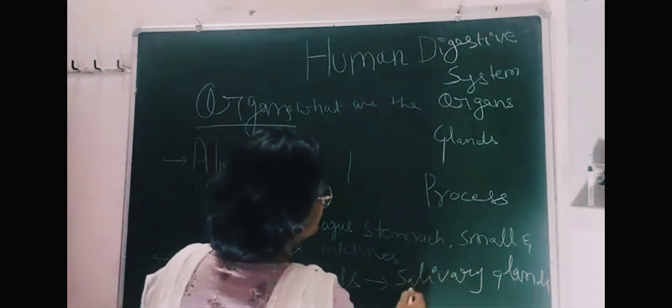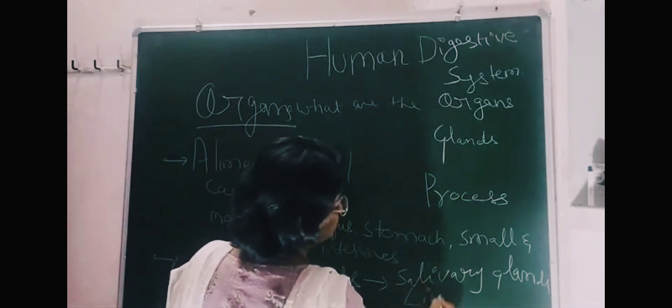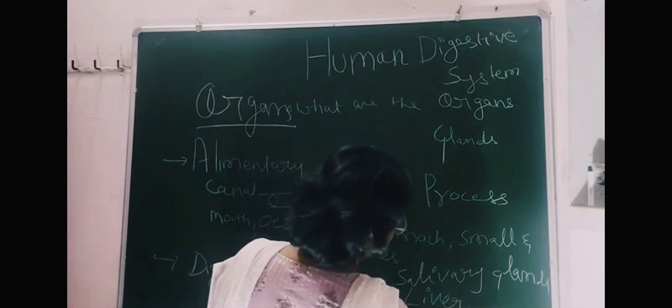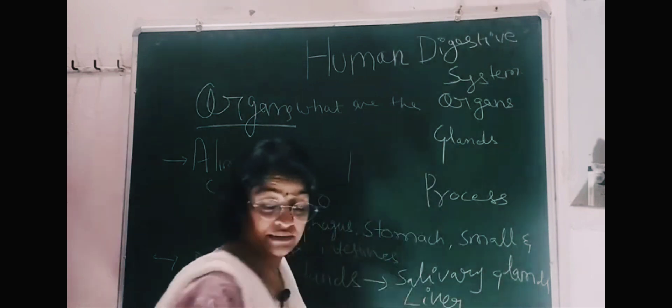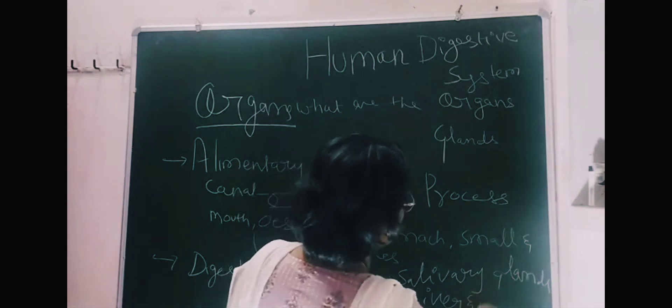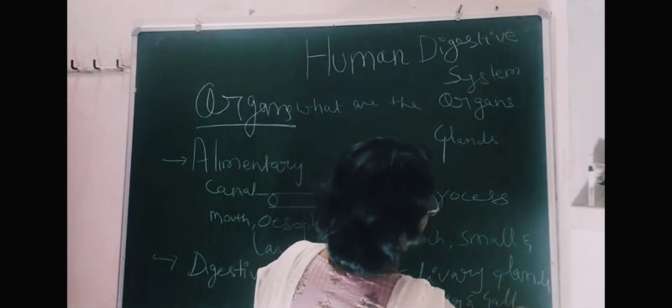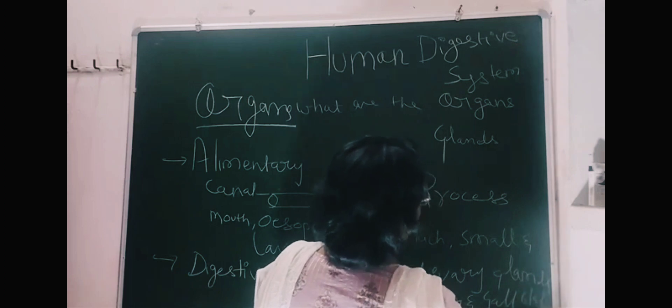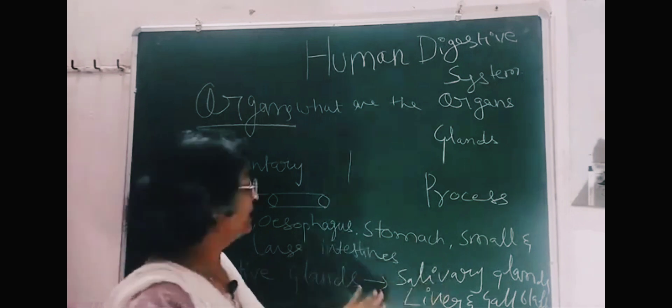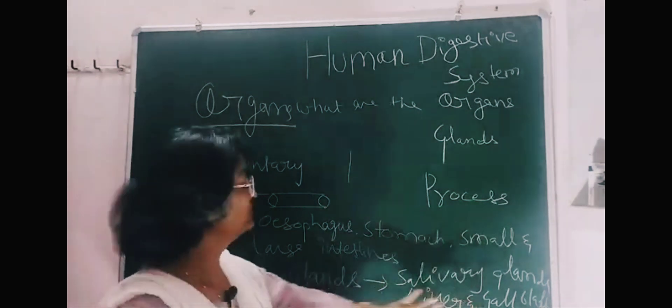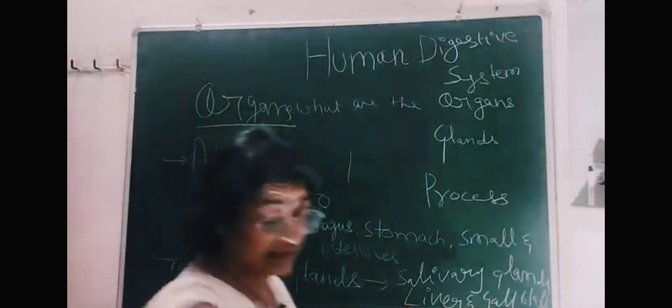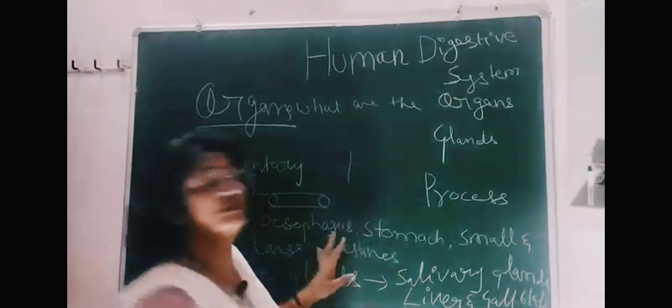Then liver, then pancreas, liver and gallbladder. So these are different organs. The liver and gallbladder are connected to the intestine. Next is pancreas and some digestive glands.